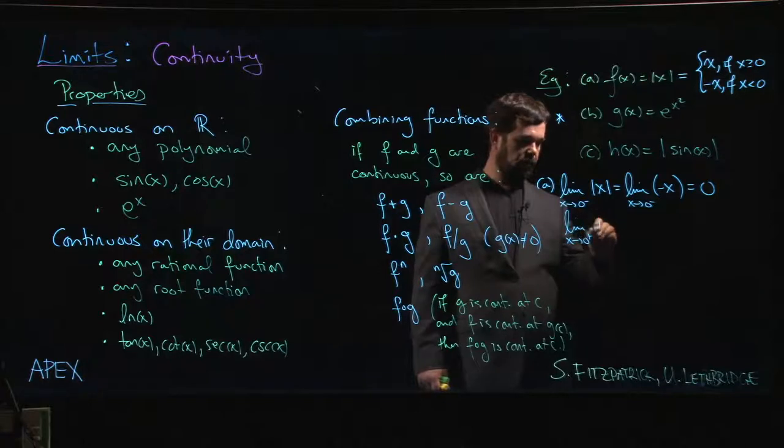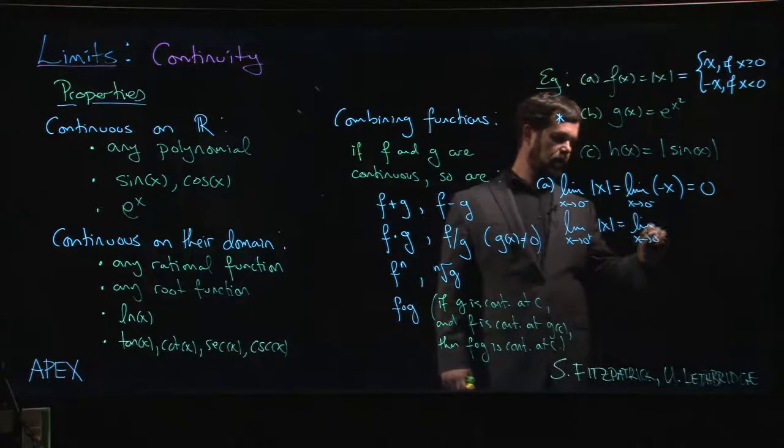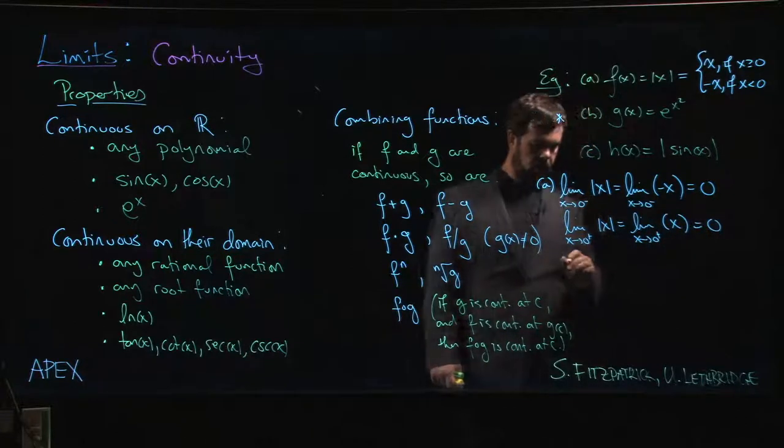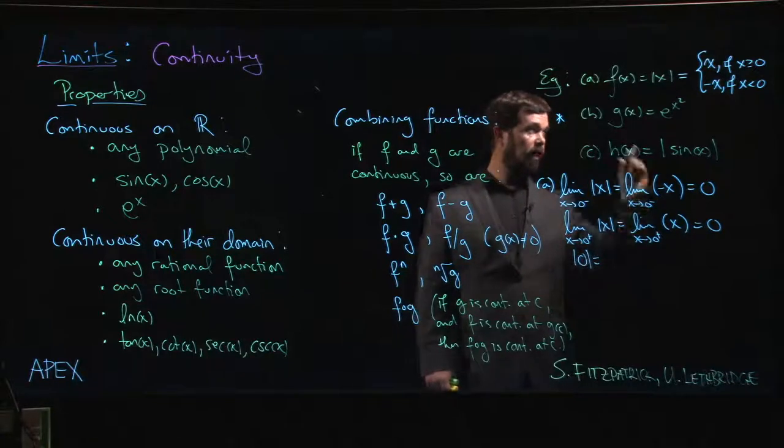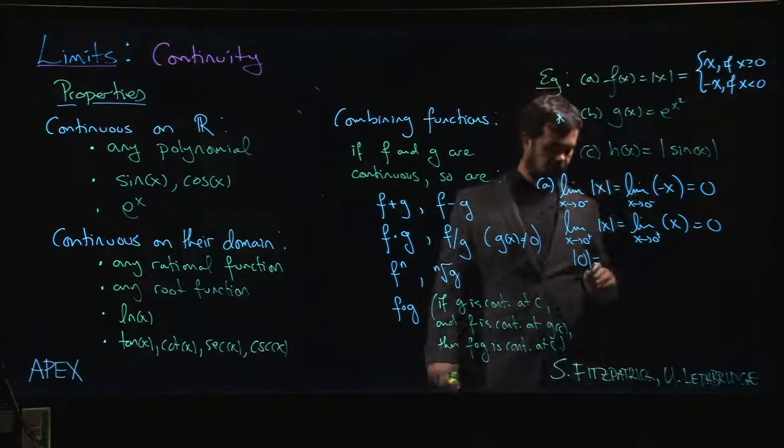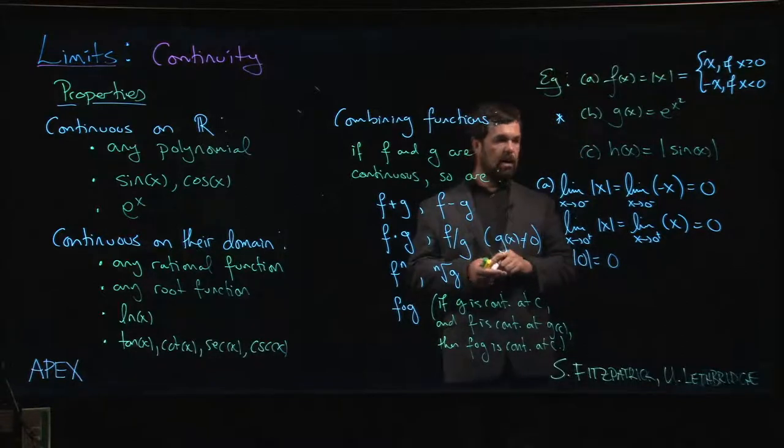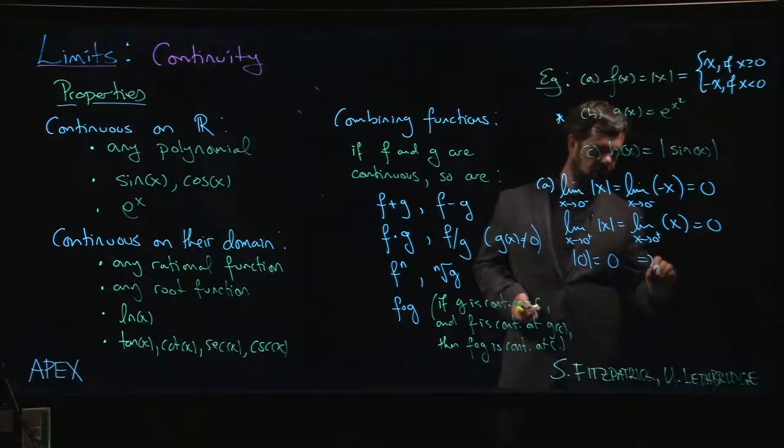The limit as x approaches zero from the right of absolute value of x is the limit as x approaches zero from the right of x, which is also zero. And I also know that the absolute value of zero—when x is equal to zero, we put zero in for x—we get zero.